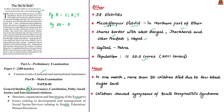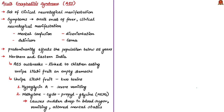Recently, in Muzaffarpur district in Bihar, almost more than 90 children have died due to low blood sugar level, showing symptoms of acute encephalitis syndrome. This syndrome is a set of clinically similar neurological manifestations caused by several different viruses, bacteria, fungus, parasites, spirochetes, chemicals or toxins. Symptoms include an acute onset of fever and clinical neurological manifestation including mental confusion, disorientation, delirium or coma.